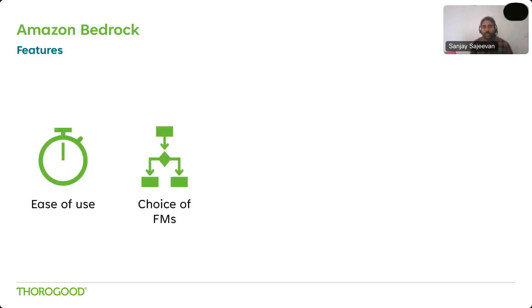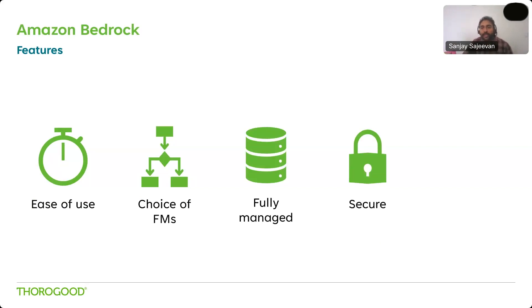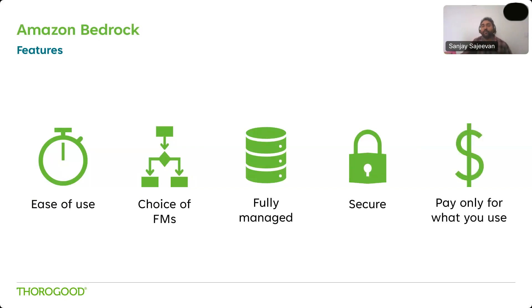Key features of Amazon Bedrock: ease of use — with just a few clicks you can get started, and even the programmatic route uses a single API for any foundation model. Choice of foundation models — a growing list of models currently supported. Fully managed — Amazon Bedrock takes care of provisioning infrastructure, scaling, and security, ensuring AI applications can handle huge volumes of data and traffic so developers only need to focus on building and deploying. Secure — strong encryption both at rest and in transit, with compliance for regulations like HIPAA and GDPR. And pay only for what you use — no upfront investment, with scalable AI usage without unpredictable expenses.